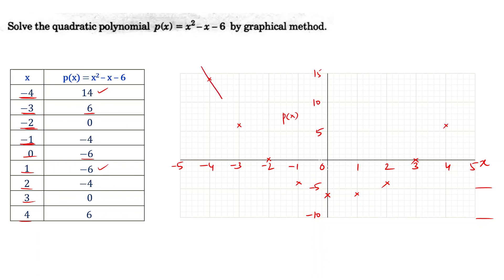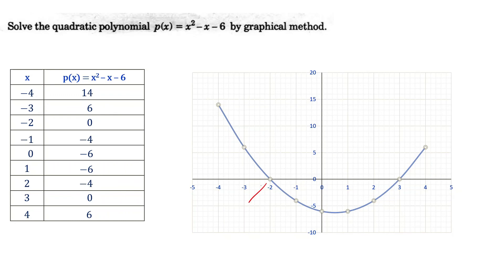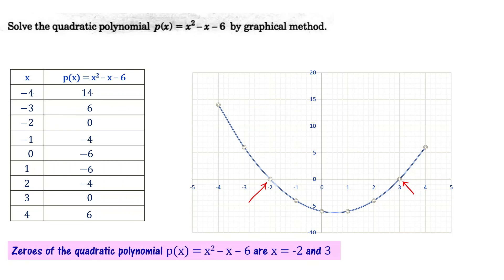Draw a smooth curve through all the plotted points. The curve cuts the x-axis at x = -2 and x = 3. Therefore, x = -2 and x = 3 are the zeros of the given quadratic polynomial P(x) = x² - x - 6.